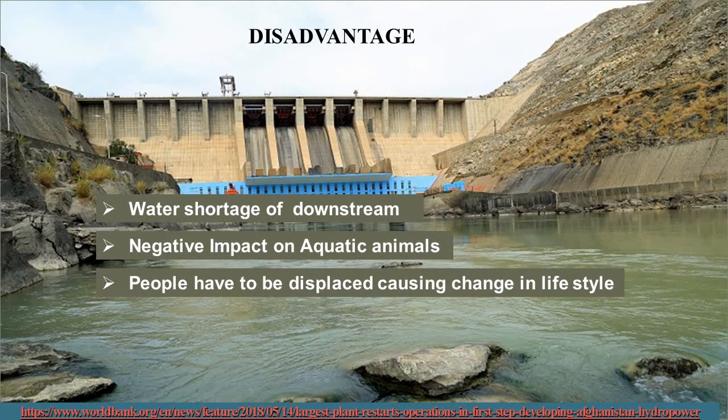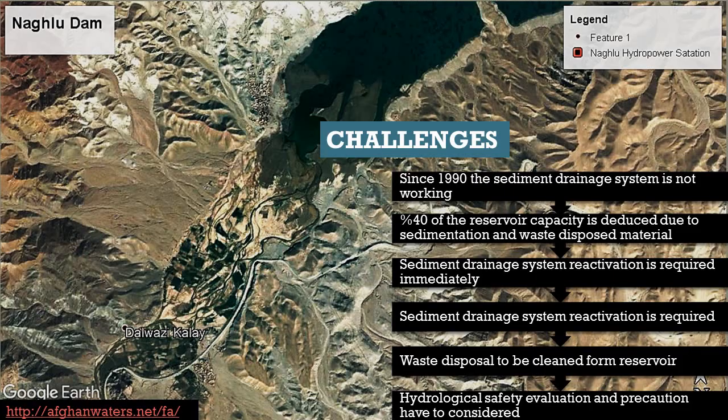Some of the negative impacts of constructing such large dams include water shortage for downstream areas, negative impact on animals that live across the river, and displacement of people. Sedimentation and low maintenance remain a big challenge for this dam.